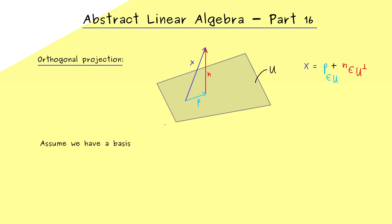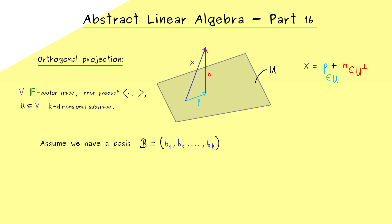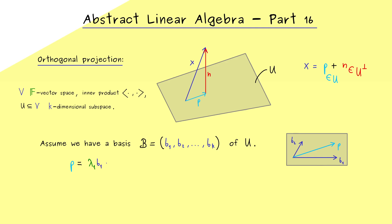The only thing we assume here is that U is a finite-dimensional subspace in the vector space V, which is always a general vector space together with an inner product. We assume that our subspace U is k-dimensional, which means we can find a basis with k elements. Hence, we can write p as a linear combination with the basis vectors b1, b2, and so on. We just need a good name for the coefficients — let's call them lambda — so we have lambda1 times b1 plus lambda2 times b2 and so on.